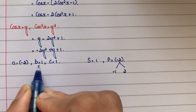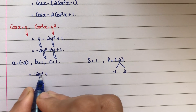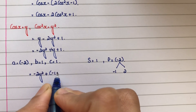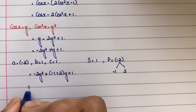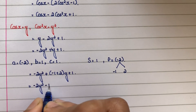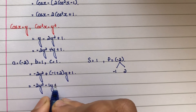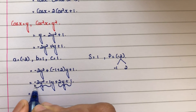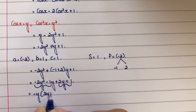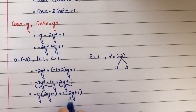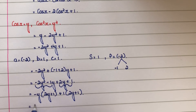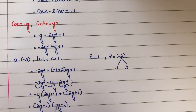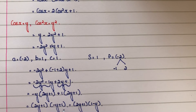So the expression becomes minus 2y squared minus y plus 2y plus 1. Grouping: first group gives minus y(2y plus 1), and second group gives 1(2y plus 1). Taking (2y plus 1) common, we get (2y plus 1)(minus y plus 1), which equals (2y plus 1)(1 minus y).